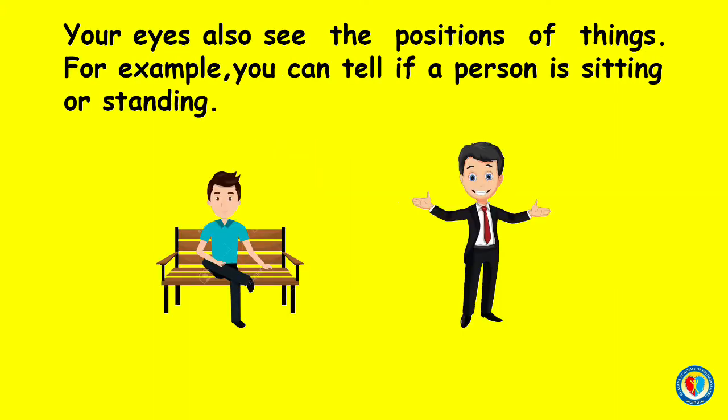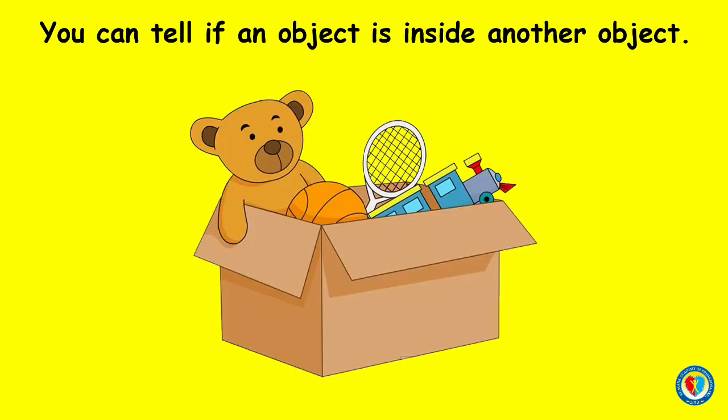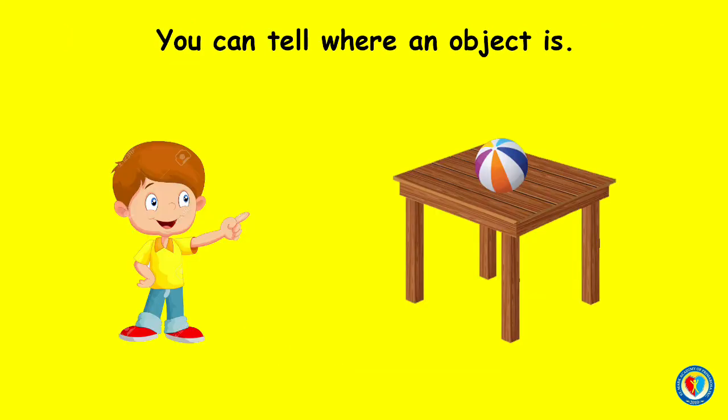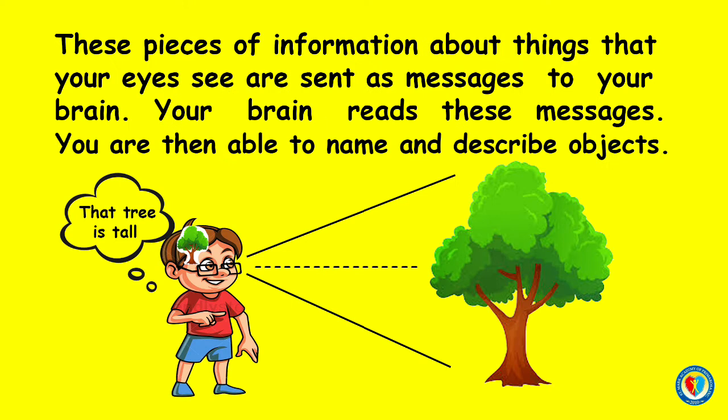Your eyes also see the positions of things. For example, you can tell if a person is sitting or standing. You can tell if an object is inside another object, and you can tell where an object is. These pieces of information about things that your eyes see are sent as messages to your brain. Your brain reads these messages, and you are then able to name and describe objects.